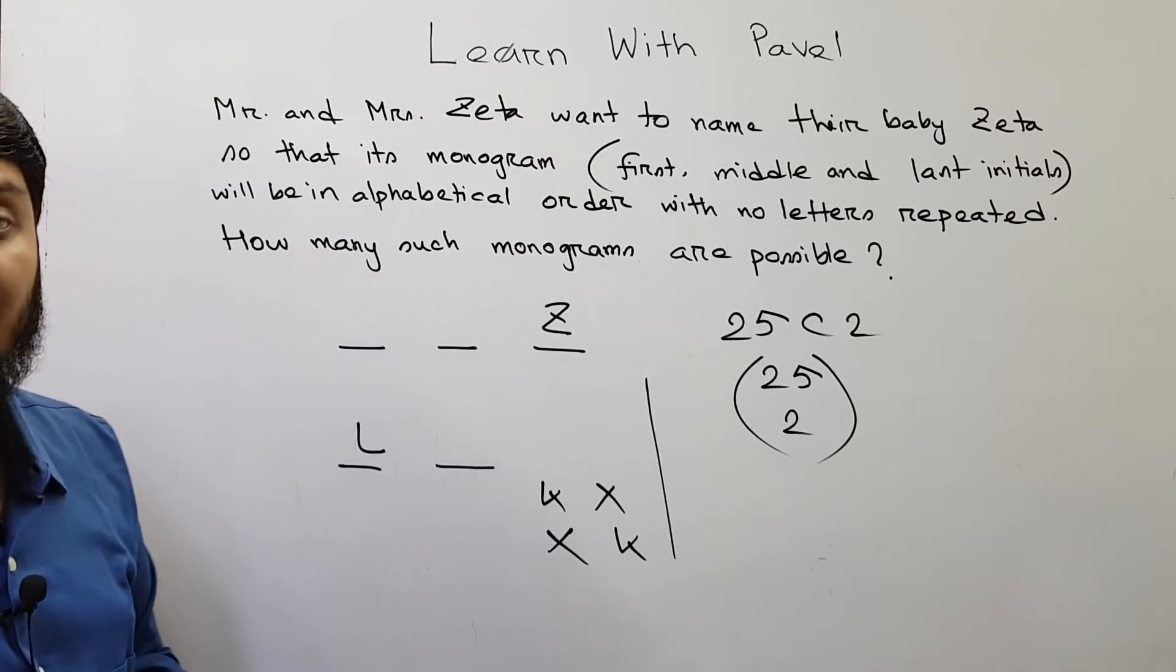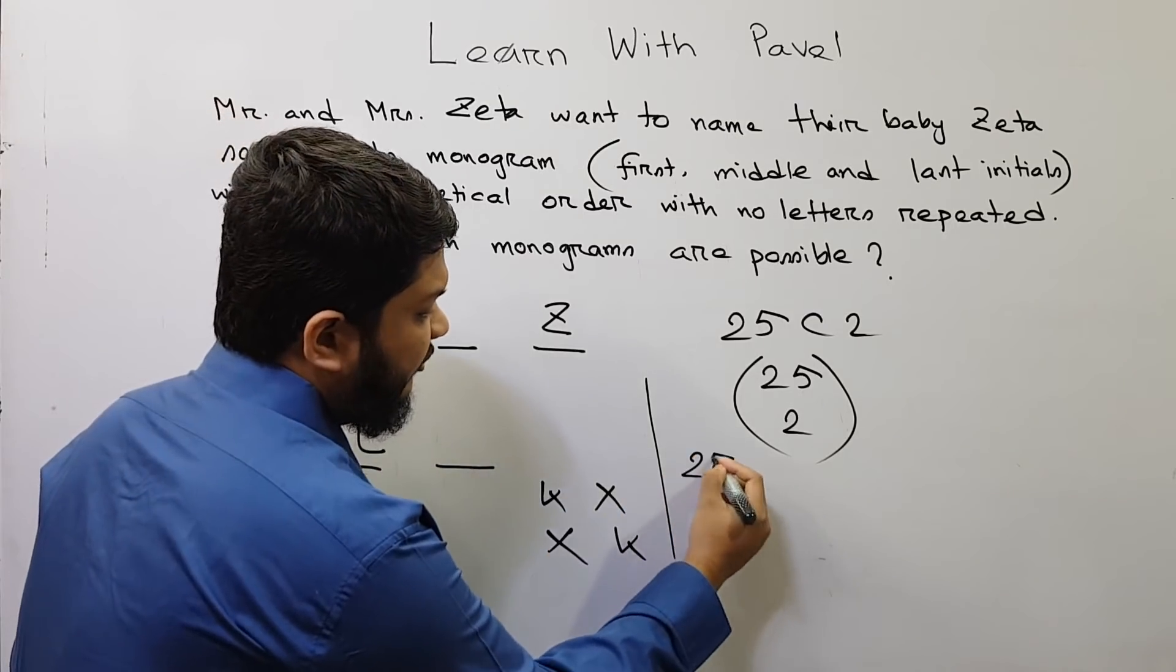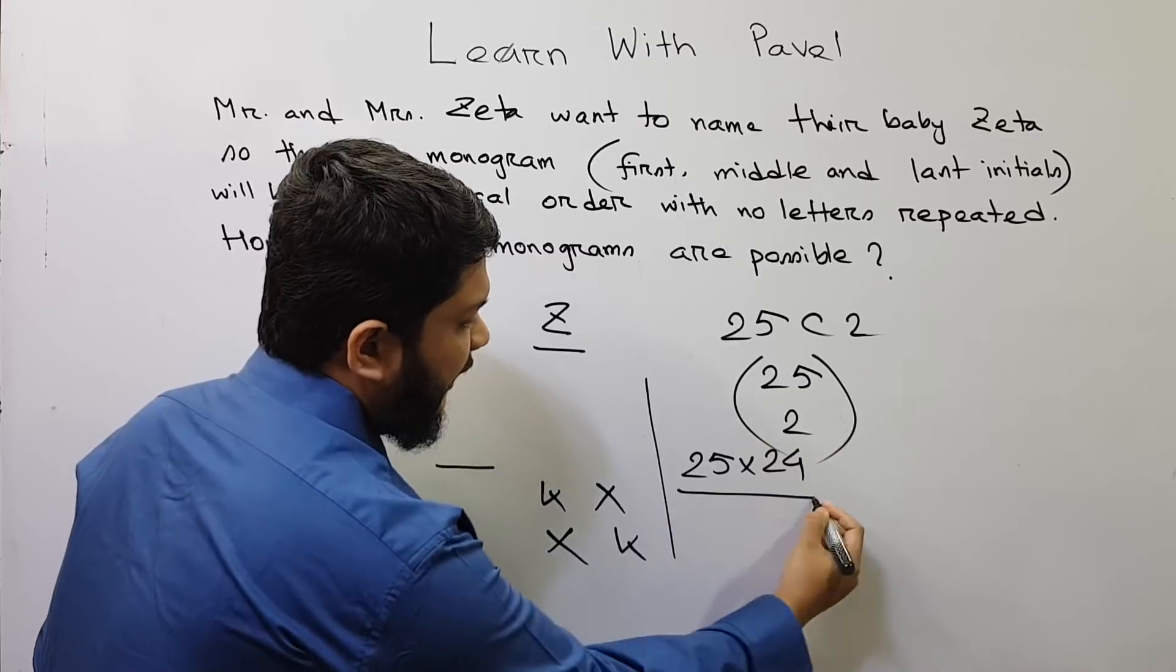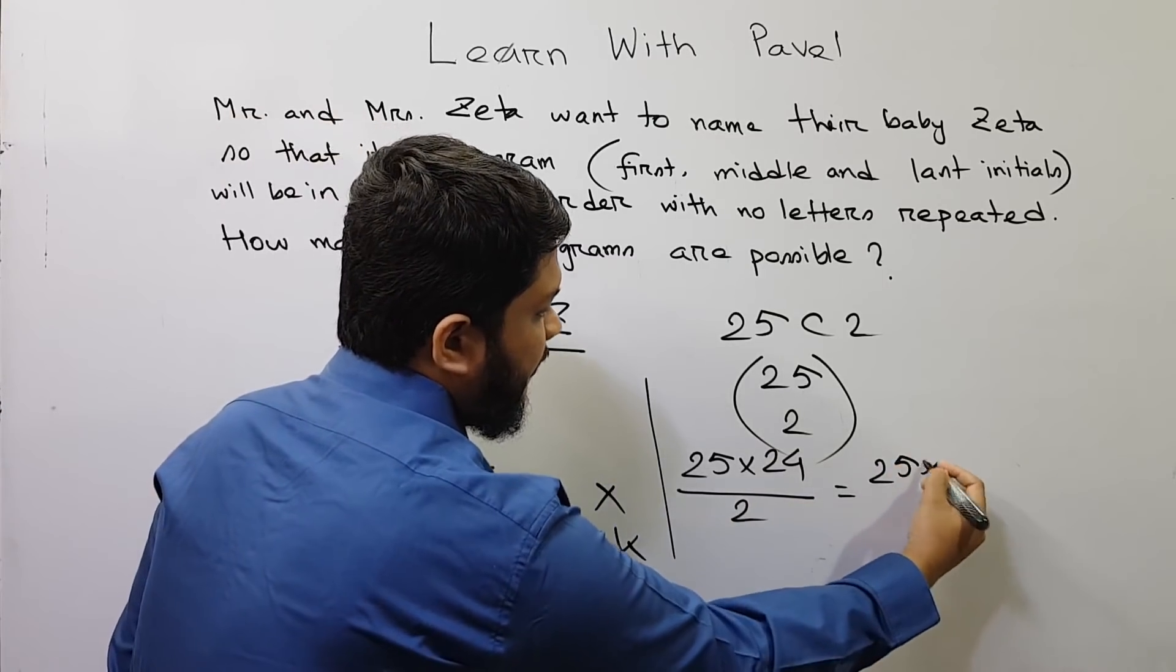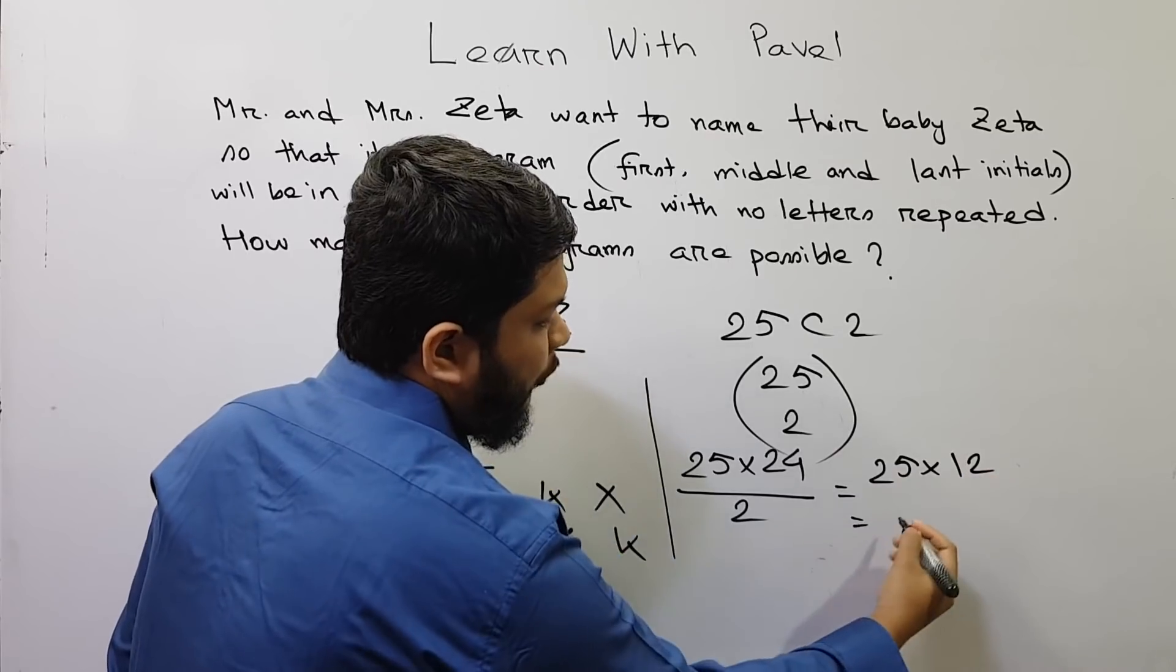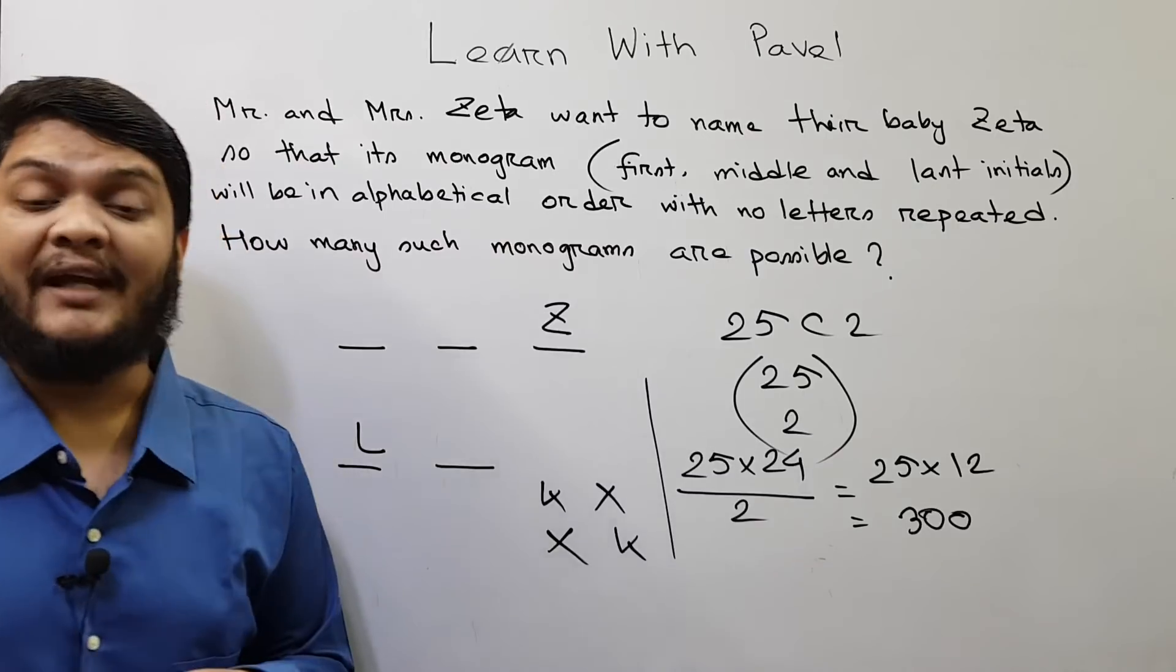So the answer will be 25C2. And what is the value of 25C2? This is 25 multiplied by 24 divided by 2. So you will get 25 times 12 which you can write as 300. So the answer will be 300.